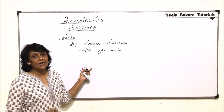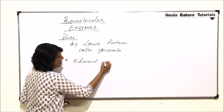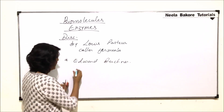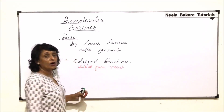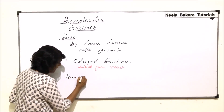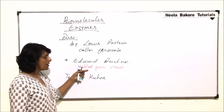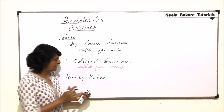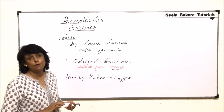At that time, the term 'enzyme' was not there. Later on, another scientist, Edward Buchner, actually isolated this substance from yeast. The term 'enzyme' was then given by Kühne. This term literally means 'in yeast,' because it was isolated from yeast. Kühne suggested it should be called enzyme, and Buchner was the one who isolated it from yeast.